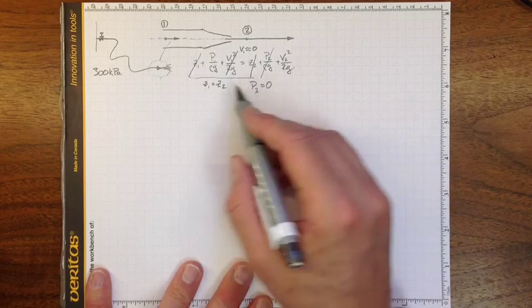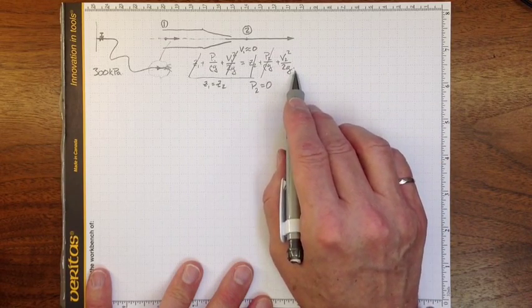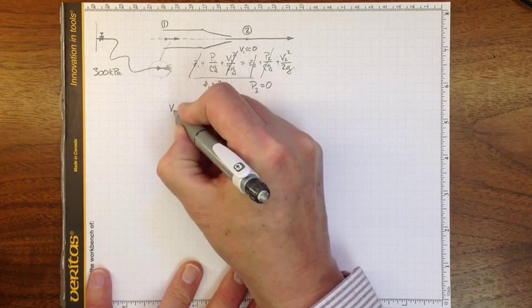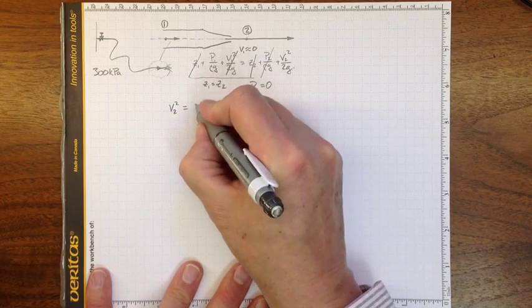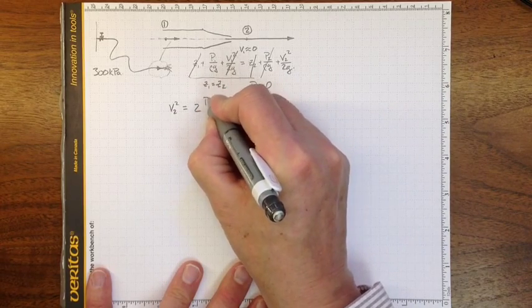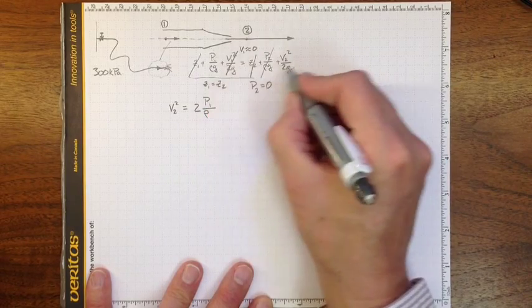And so I'll wind up with P1 over rho g equal to V2 squared over 2g. Or if I rearrange that, V2 squared equal to 2 times P1 over rho. So the g's will cancel out here.